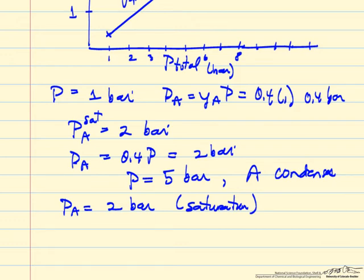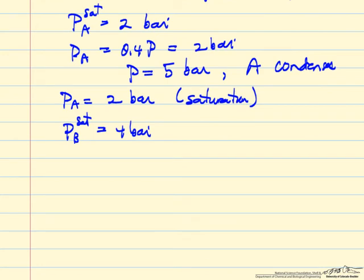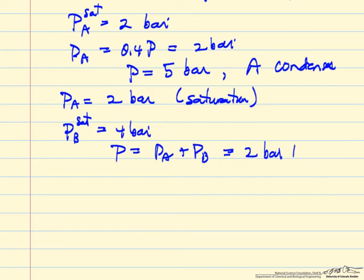As A condenses out, the partial pressure of B increases — the mole fraction of A is decreasing and the mole fraction of B is increasing. Since the saturation pressure of B is 4 bar, at some point B will also condense. The total pressure equals the partial pressure of A plus the partial pressure of B. Once liquid A is present, A stays at its saturation pressure of 2 bar, so B reaches saturation when the total pressure is 6 bar.